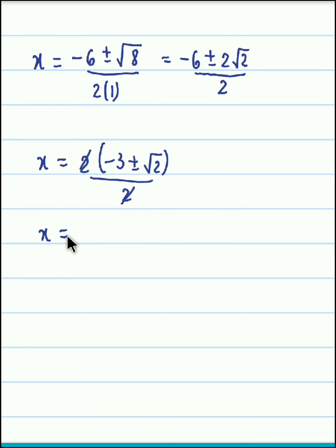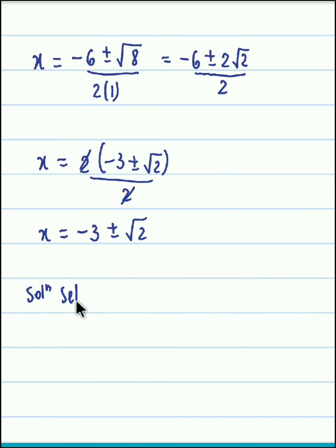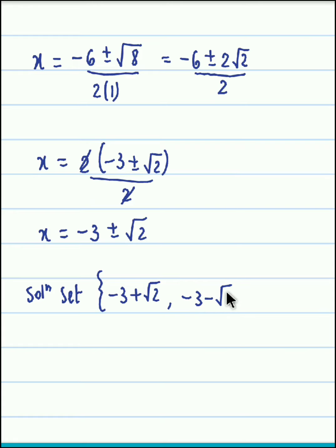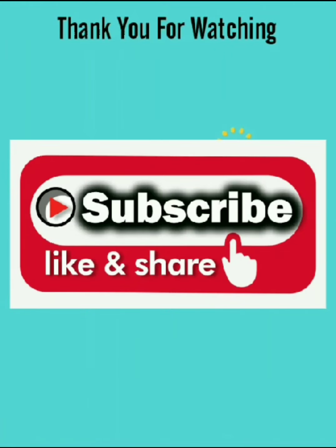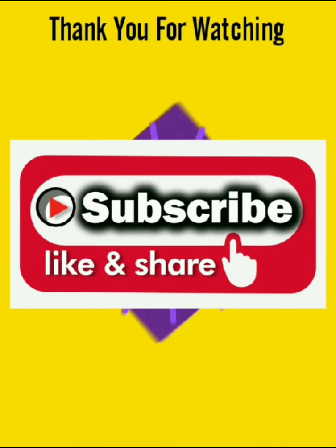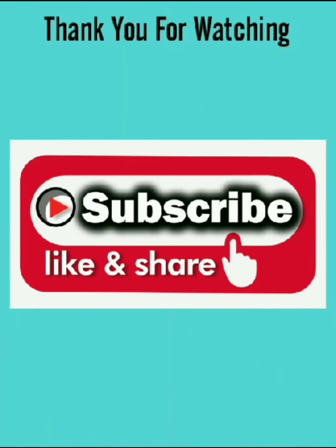So x equals minus 3 plus or minus root 2. We have finally obtained the values for x. The first value is minus 3 plus root 2, and the second value is minus 3 minus root 2. This is how you solve the given quadratic equation. Like it, share it, and subscribe to our channel for more such interesting videos. Thank you.